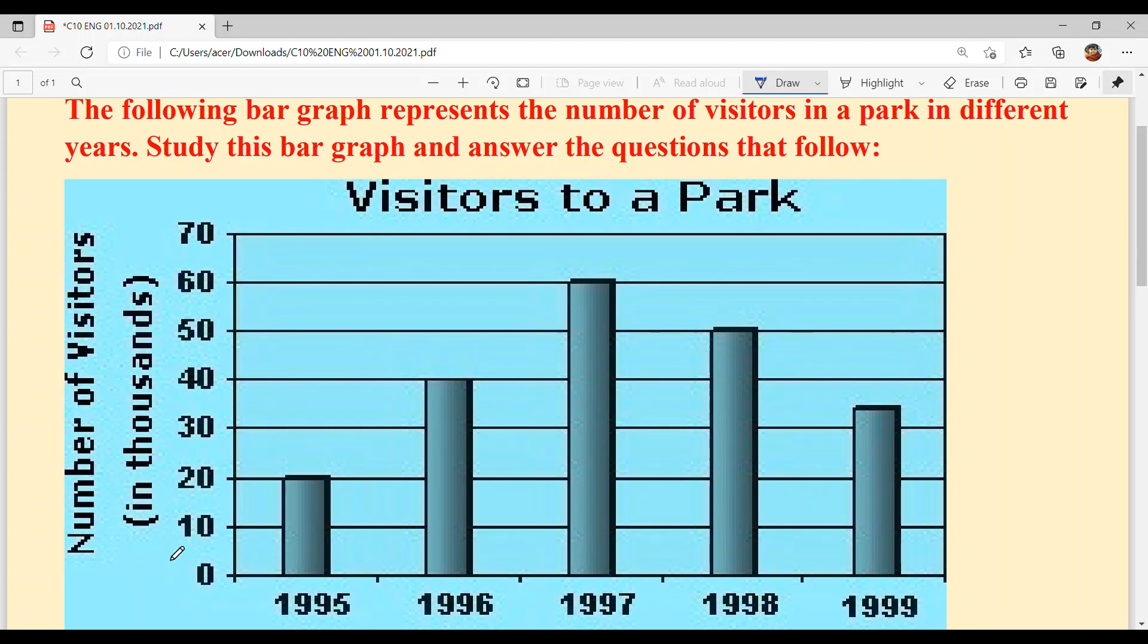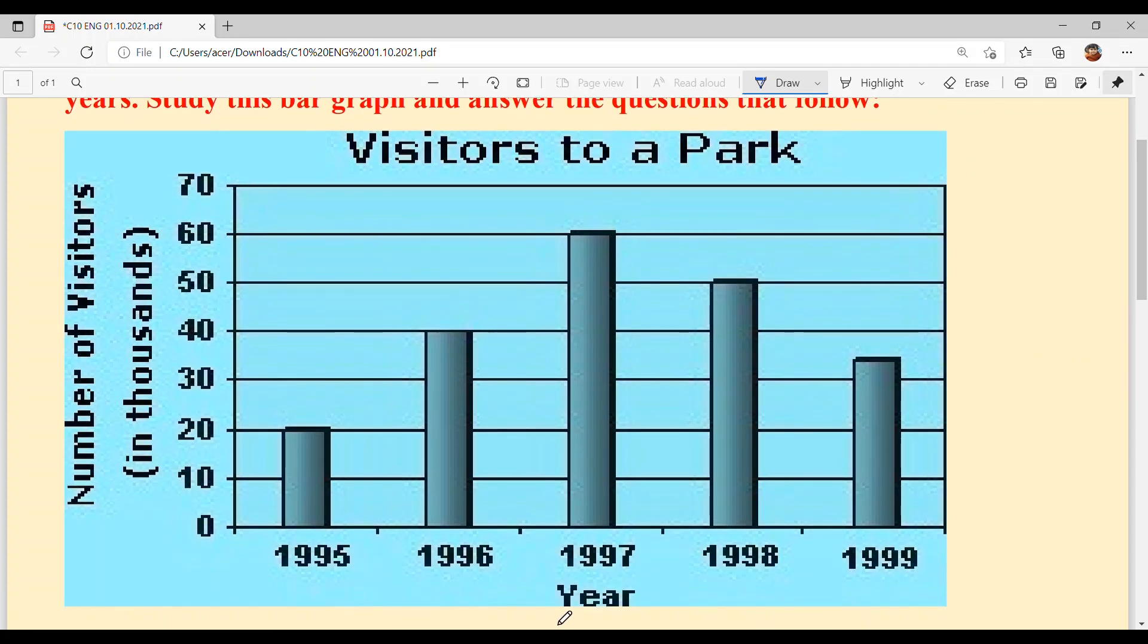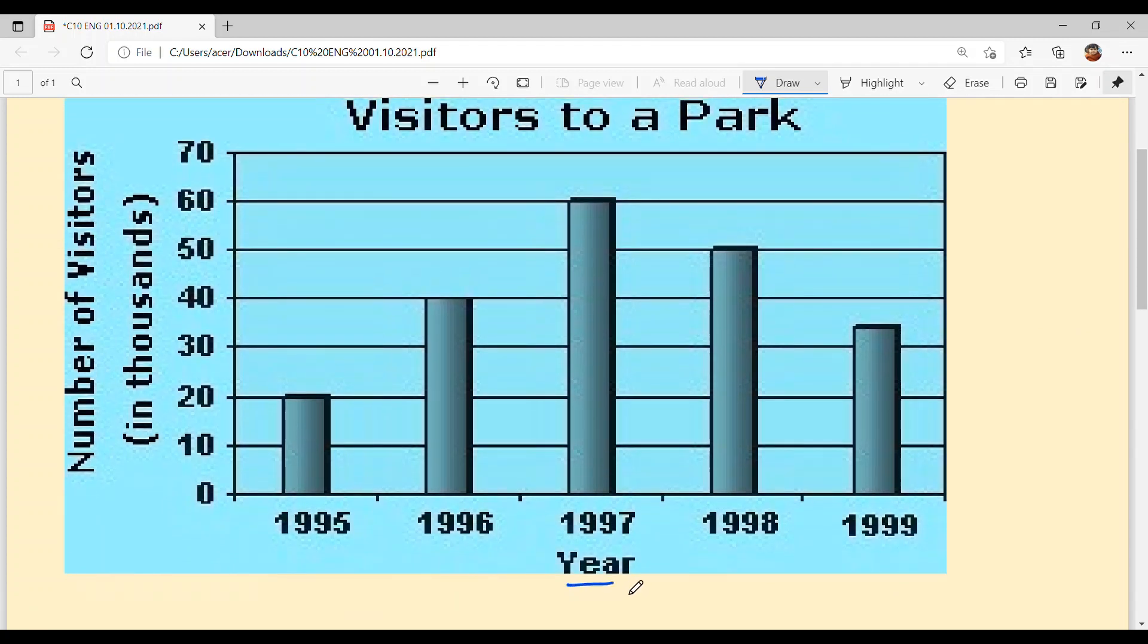The number of visitors is in thousands. This means 10,000, 20,000, 30,000, 40,000, 50,000, 60,000, 70,000. Okay, and here on the x-axis, we have the years.